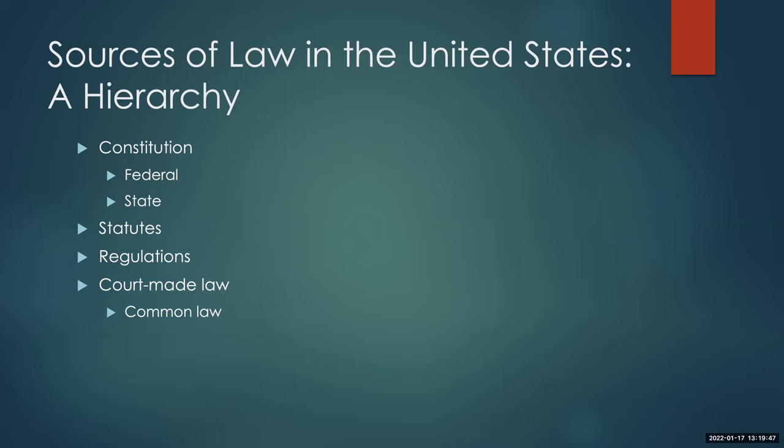That court decision becomes the law. If someone has a similar property dispute in the future, we can look back at this body of decisions created by courts and find a rule — such as: you can cut down the part of a tree that hangs over your property, but you can't go onto your neighbor's property to further harm the tree. This development of law is extraordinarily important in common law jurisdictions, particularly in the U.S. We adopted the common law that was in place in Great Britain when we broke away in the late 1700s.